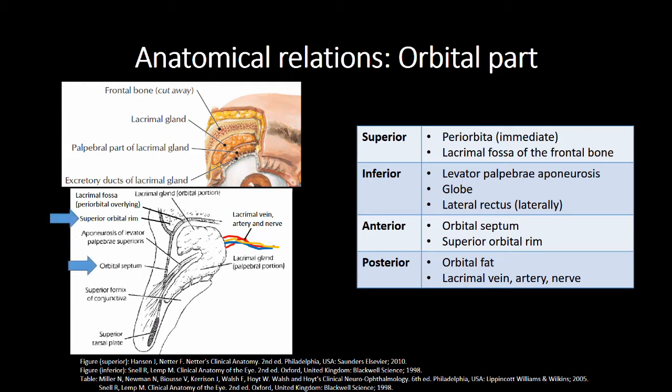Anteriorly, we have the orbital septum and the superior orbital rim. Posterior to the gland lies the orbital fat and lacrimal vein, artery and nerve.